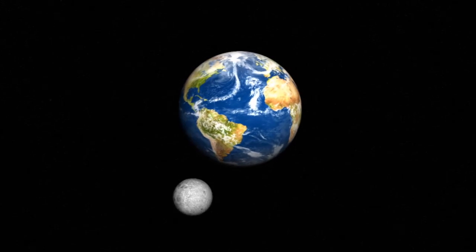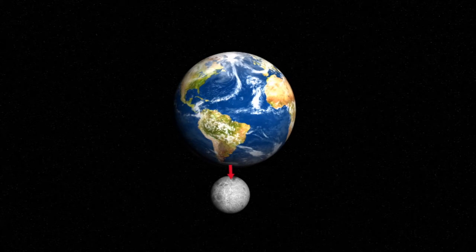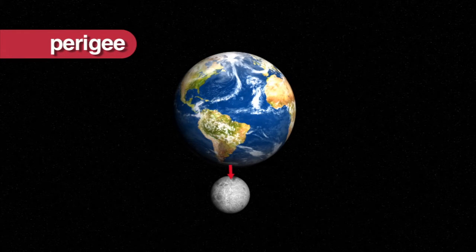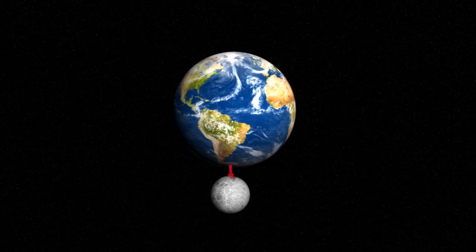When the Moon is at its closest point to the Earth, we call that its perigee. During perigee, the Moon appears larger.